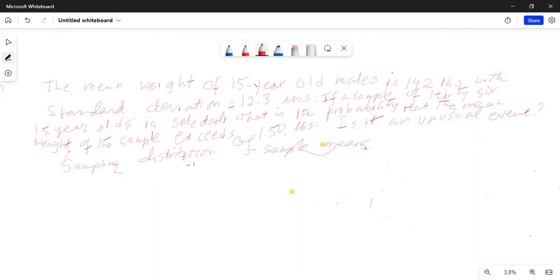So from central limit theorem, we know the mean of the sampling distribution will be mu x bar, which is mean of sampling distribution. And that is equal to mu of the population, which is equal to 142.